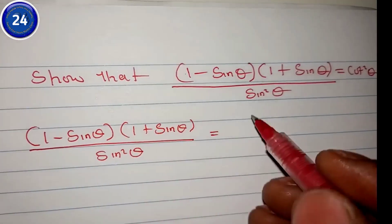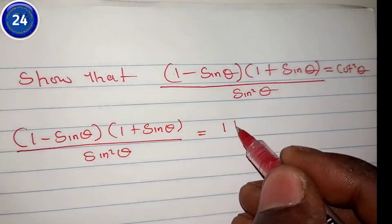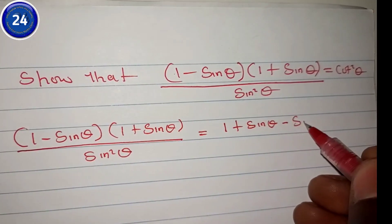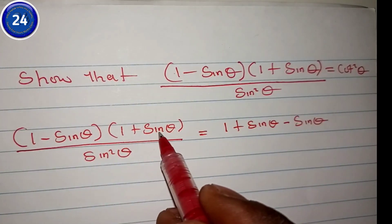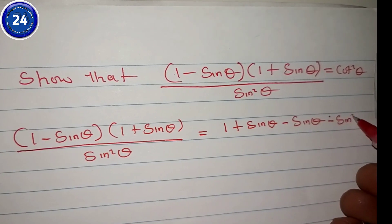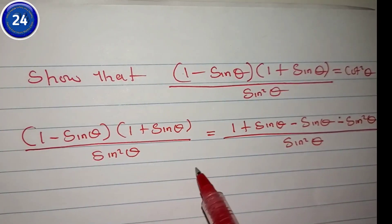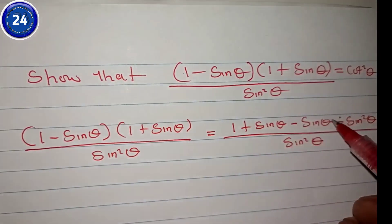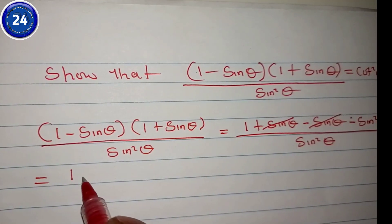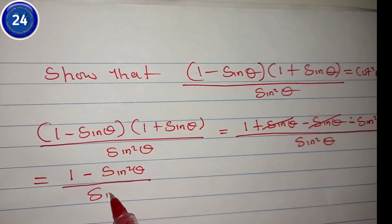We expand this bracket: one times one is one, one times sine theta is sine theta, minus sine theta times one is minus sine theta, minus sine theta times sine theta is minus sine squared theta — all over sine squared theta. The negative and positive sine theta terms cancel, and we are left with one minus sine squared theta, all over sine squared theta.